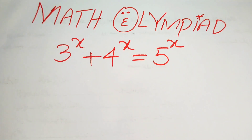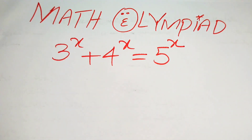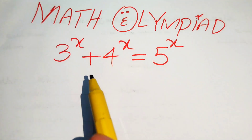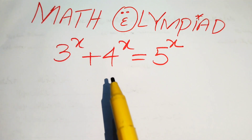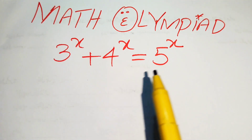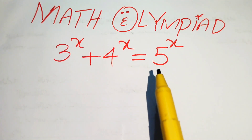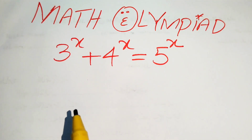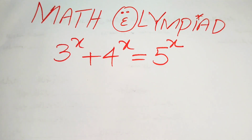Hello everyone, welcome. We are going to solve this math exponential equation problem. Here we have 3 to the power of x plus 4 to the power of x equals 5 to the power of x, and we solve this problem for the values of x.